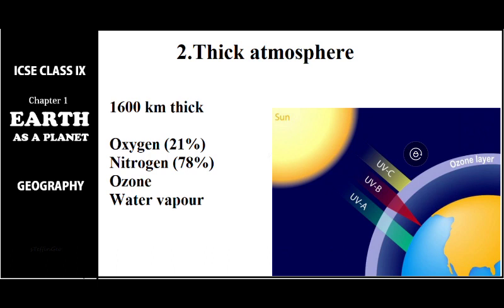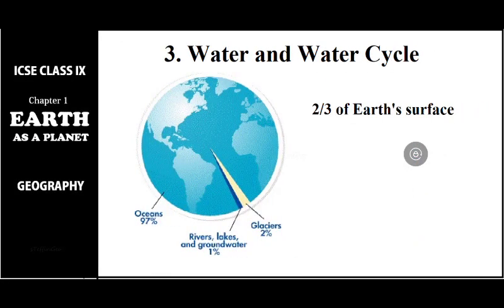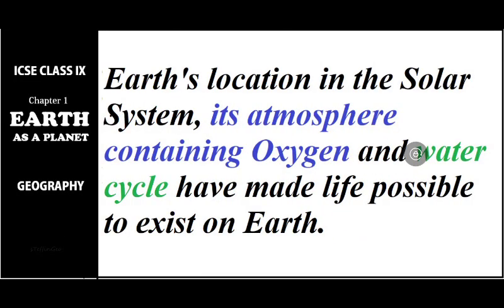Water vapor in the atmosphere also helps maintain the heat of the atmosphere. So this thick atmosphere with all these factors is the second important thing that supports life on earth. The third important factor is water and the water cycle — about 70 percent of the entire earth's surface is covered with water. To summarize: the earth's location in the solar system, its atmosphere containing oxygen, and the water cycle have made life possible on earth. This is the end of the lesson.